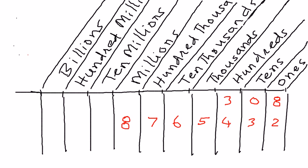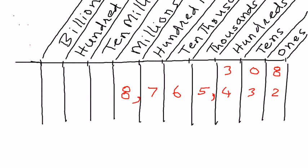So how do we read this? We read it as eight million, seven hundred and sixty-five thousand, four hundred and thirty-two. We always take three numbers as a block, and therefore we read it out as eight million, seven hundred and sixty-five thousand, four hundred and thirty-two.